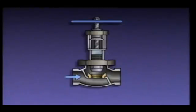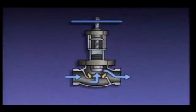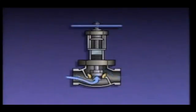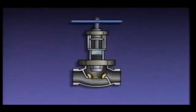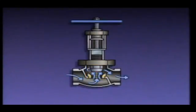Fluid flow enters a globe valve here and exits here, making several right-angled turns as it passes through the valve. Globe valves are normally arranged in a piping system so that the higher pressure side is acting under the disc of the valve. This makes it easier for an operator to open the valve. As a globe valve is opened, the entire disc and seat are exposed to the fluid flow, which prevents uneven wear of the seat and disc.